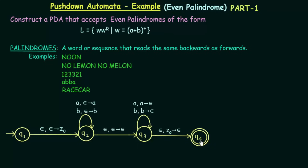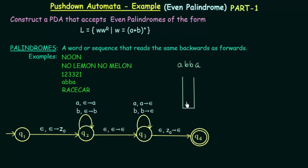Let us trace the example string ABBA, which is an even palindrome. Starting in Q1, we push Z0 onto the stack, then move to Q2. In Q2, the first input is A — we don't pop anything but push A onto the stack. The next input is B — we are still in Q2, so we don't pop anything but push B onto the stack.